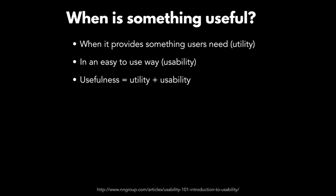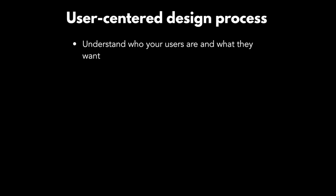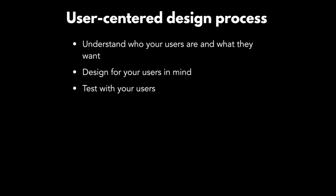Usefulness can be measured by the utility an app provides and its usability. When is something useful? When it provides something users need — that's utility — and when it provides it in a way that's easy to use — that's usability. There are many useful methods that can help you create good usable apps. Adopting a user-centered design process is one: you need to understand who your users are and design for what they want. One of the most important things is to test your app with actual users.